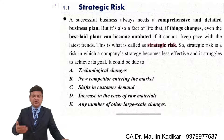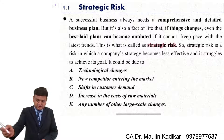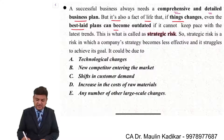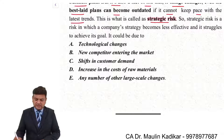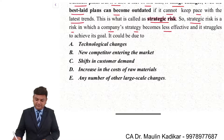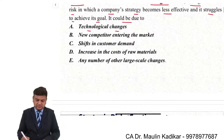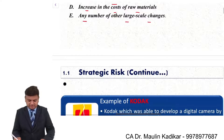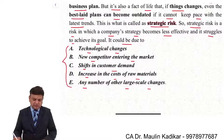A successful business always needs a comprehensive and detailed business plan. But it is also a fact of life that if things change, even the best laid plans can become outdated if they cannot keep pace with the latest trends. This is called strategic risk — the risk in which the company's strategy becomes less effective and it struggles to achieve its goals. It could be due to technological changes, new competitors entering the market, shift in customer demand, increase in cost of raw materials, or any large-scale changes.